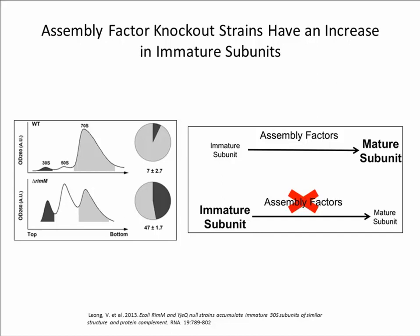A substantial obstacle when studying ribosome assembly is that the process is so rapidly efficient in cells that intermediates do not naturally accumulate. Consequently, it is hard to obtain ribosomal particles that are in the process of being assembled and identify the specific roles assembly factors play. The absorbance profile of ribosomes purified by sucrose gradient ultracentrifugation shows the separation of individual 30S, 50S, and 70S ribosomes. The majority of ribosome constituents are in the associated 70S form with little free subunits remaining, making it difficult to harvest appreciable quantities of in vivo assembled subunits in wild-type cells.